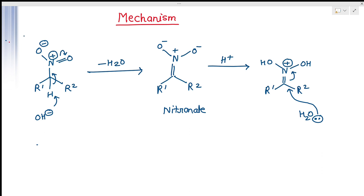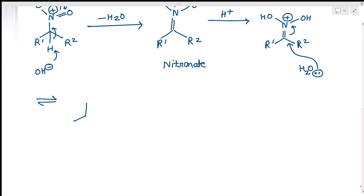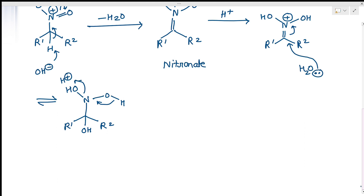This is a reversible step. As a result, we get a compound with OH and OH-H groups. Then there is an attack by a proton; this bond moves and that bond goes, resulting in the removal of H2O and giving the intermediate with R1, R2, OH, and a double bond.